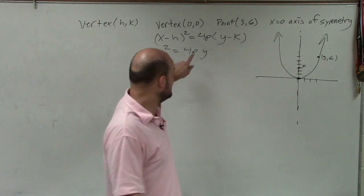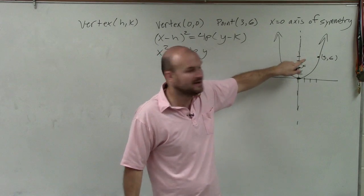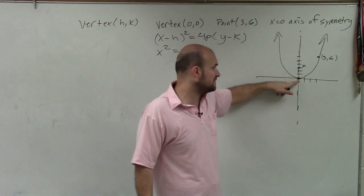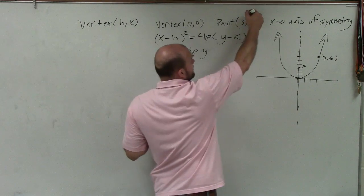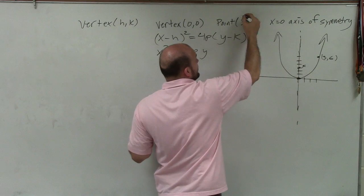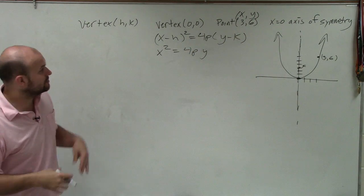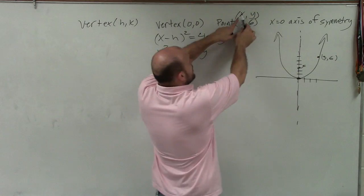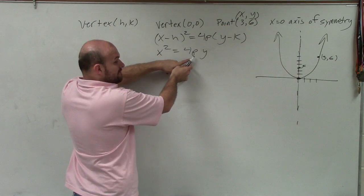So now what we need to do is we need to figure out p, right? What exactly is this focus? I just estimated, right? But really we need to know what is the distance from the vertex to the focus, which is p. So we don't know p, but we do know a point 3 comma 6. And any point on the parabola is really a coordinate in x and y. So what I can do is if I plug in 3 in for x and 6 in for y, then the only variable left I could solve for would be p.